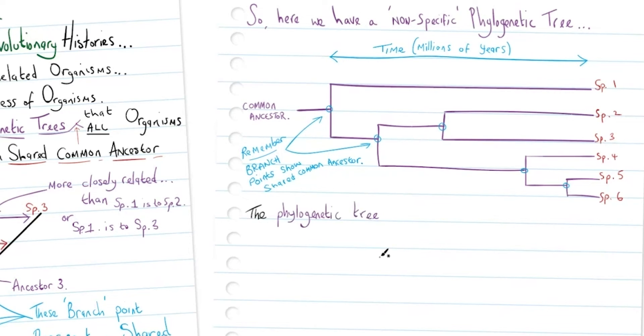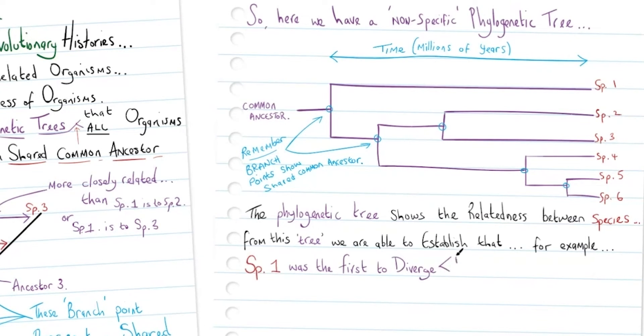The phylogenetic tree shows the relatedness between species. From this tree we are able to establish that, for example, species 1 was the first to diverge from the common ancestor. We can also see that species 4 is more closely related to species 5 than it is to 3.